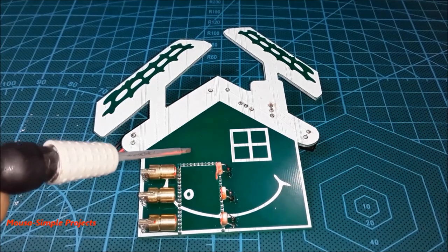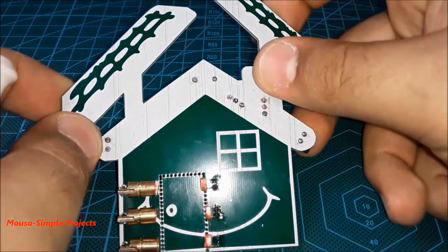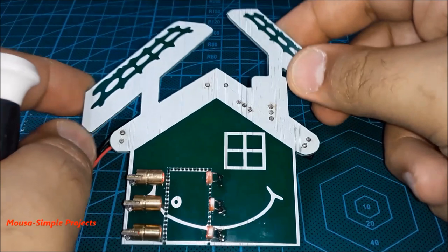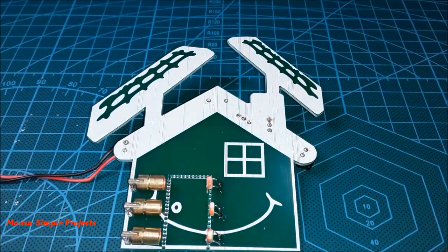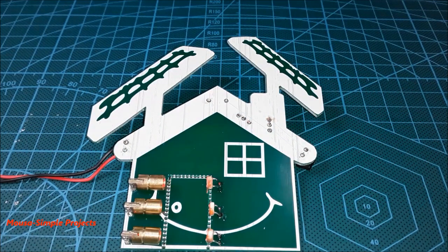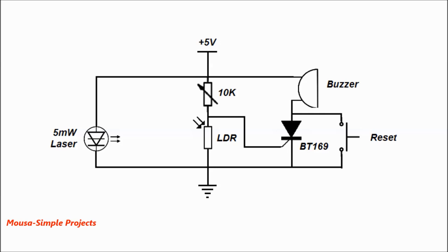Hey guys, in this video I make a simple anti-theft circuit which is made with a few components. This circuit is based on SCR, laser diode, and LDR. When the LDR is exposed to laser light, its resistance decreases.